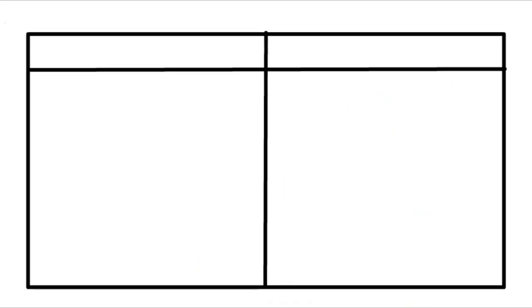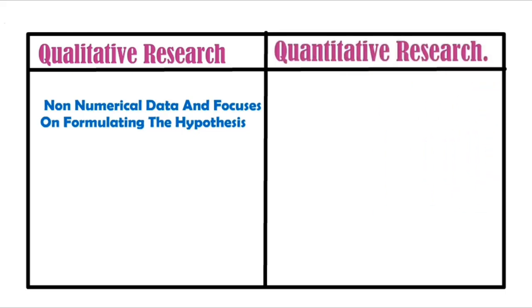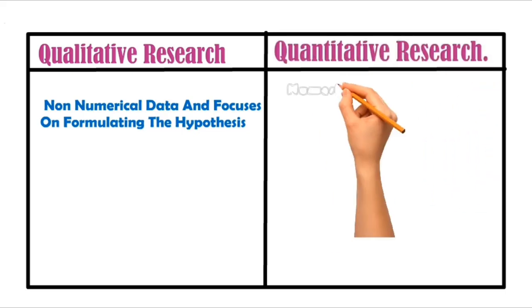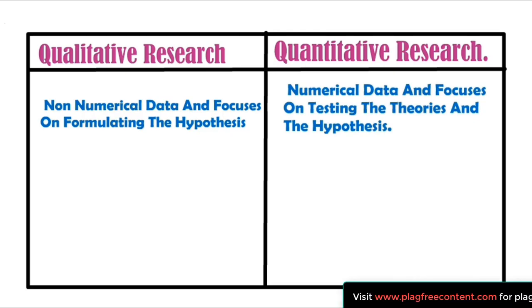In a nutshell, we can say qualitative research generally analyzes non-numerical data and focuses on formulating the hypothesis. Whereas the quantitative research method is generally used to analyze numerical data and focuses on testing theories and the hypothesis.